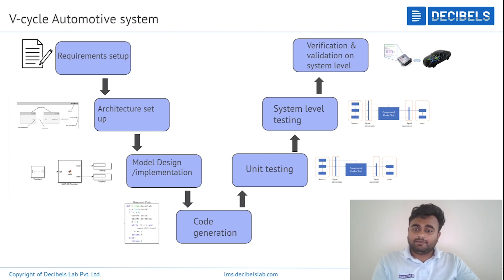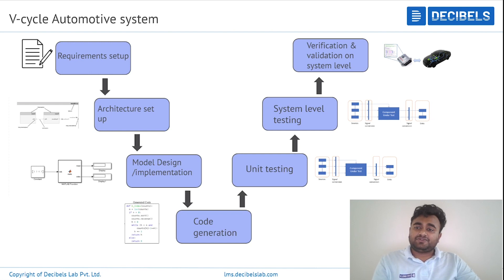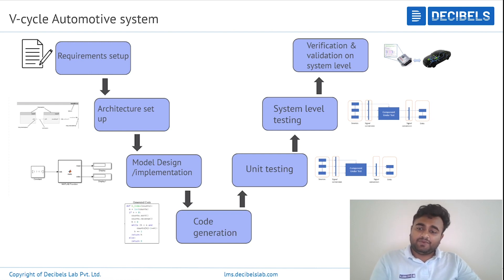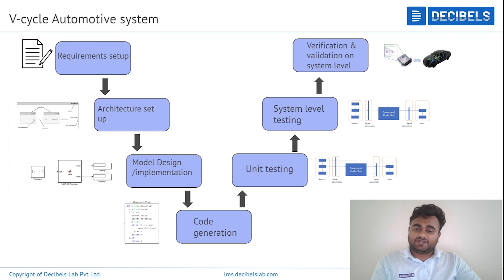Once architecture modeling is done, it is passed to the design team, where they derive the logics, equations, and algorithms based on the given requirements. Based on that, they build the model according to those logics and algorithms, and then it is passed to the implementation team.